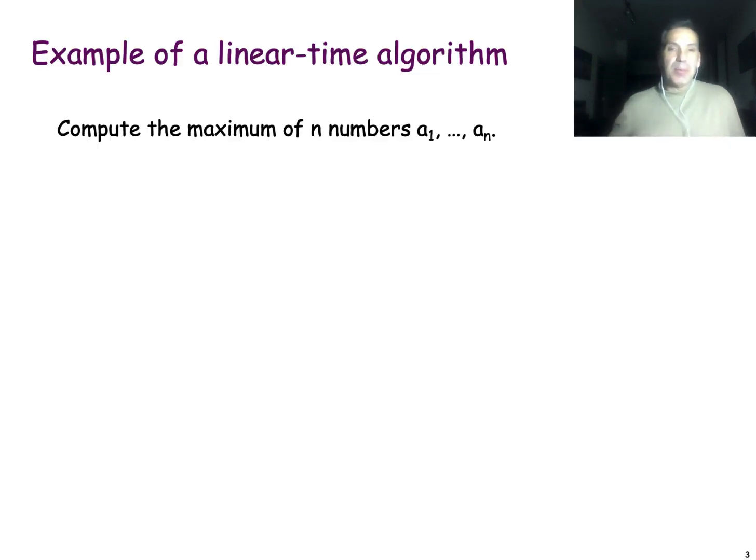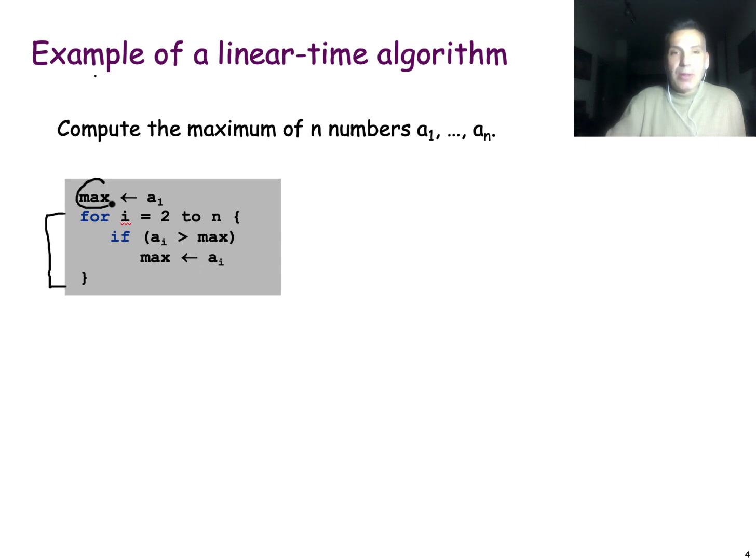So the first problem is, suppose that I ask you to compute the maximum of n numbers. Suppose that the numbers are in an array, a1 through an, and you just need to find the largest of these numbers efficiently. If you think about it for a minute, it's very simple. We can just have a for loop that goes through the numbers one by one. We maintain a variable, call it max, that has the largest number we have seen so far. Whenever we see a number ai that is larger than the max, then we set max equal to ai.